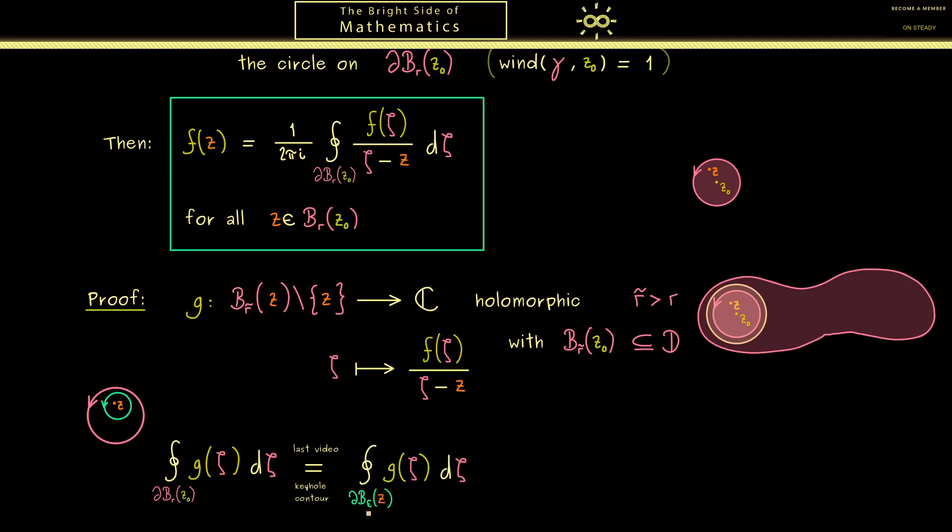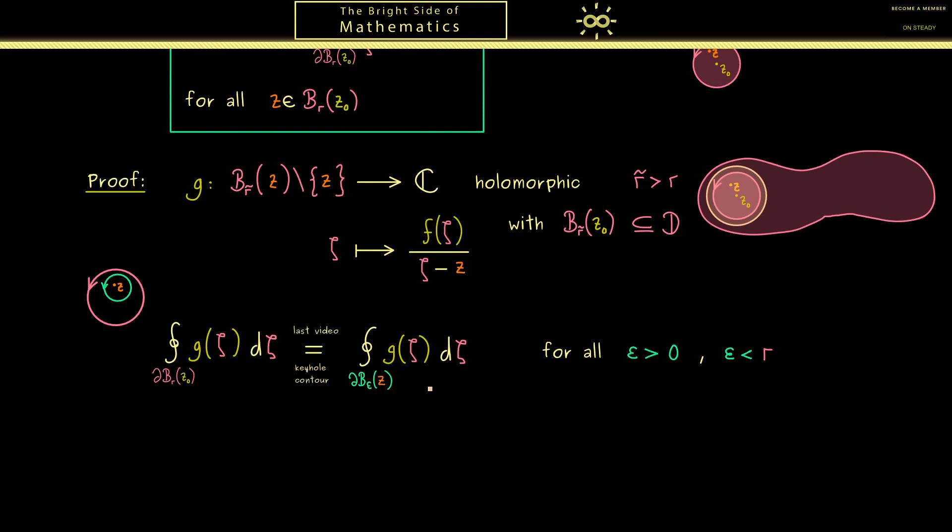So now please note here instead of the radius r, we have any small radius epsilon here with the midpoint z. Of course, the only restriction we have is that epsilon should be smaller than r. Now by having changed this integral here, our calculation gets much easier. And in the next step, we just need an idea how to split up the function g so that we can calculate this integral.